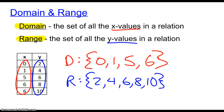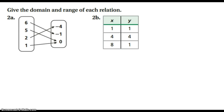This can also be done with maps. We already did a table one, so I'm going to skip that. If we do this with a map, our x values always come first — that's our input — and that gives us an output.